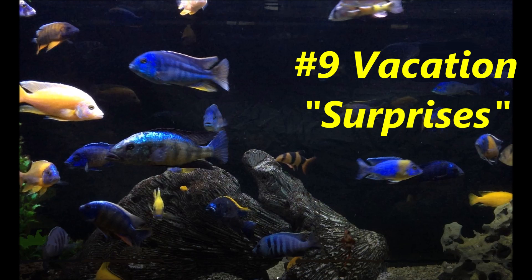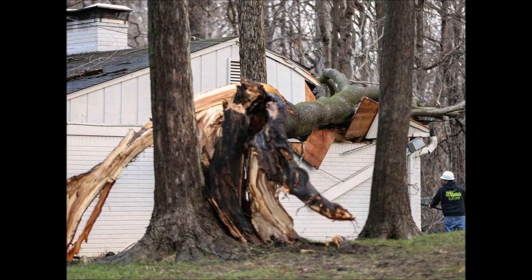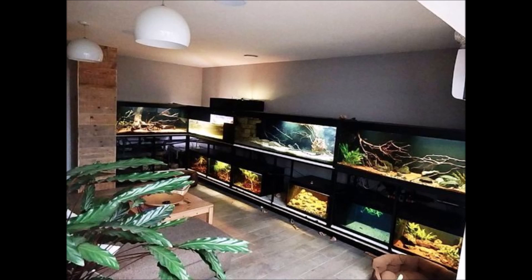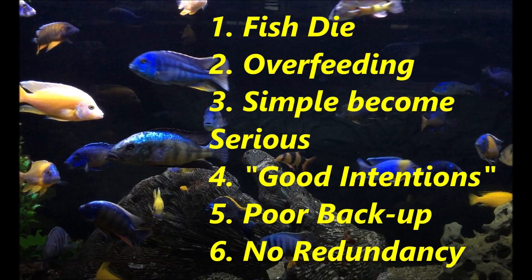Last but not least are surprises that occur while we're going on vacation. I've personally had trees fall in the house and floods. For a complex fish room, you can imagine the different things that can go wrong. Vacation surprises include a fish dying and not being caught, overfeeding while you're gone, equipment or aquarium malfunctions becoming serious and not being caught, good intentions from folks who try to fix things but don't know how, having the wrong person taking care of your aquarium, and not having redundant systems in case one fails.